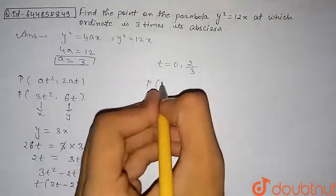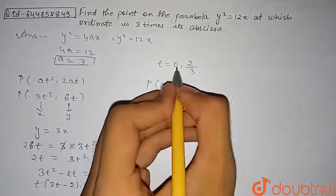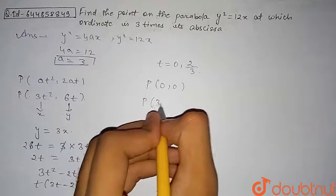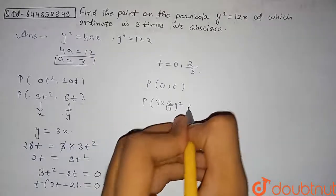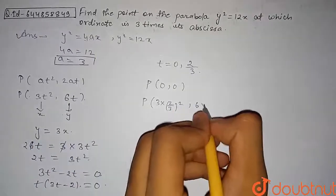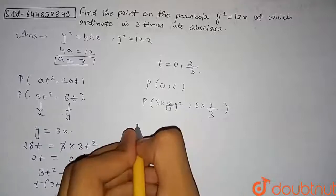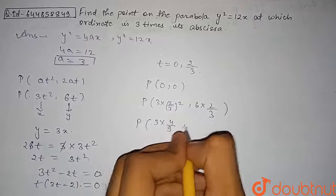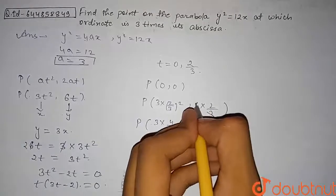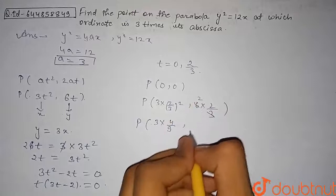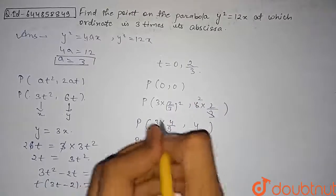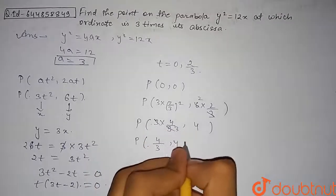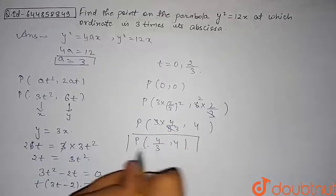The coordinates of point P are (3t², 6t). For t = 0, the point is (0, 0). For t = 2/3: x = 3 × (2/3)² = 3 × 4/9 = 4/3, and y = 6 × (2/3) = 4. So the point P is (4/3, 4). Our required points are either (0, 0) or (4/3, 4).